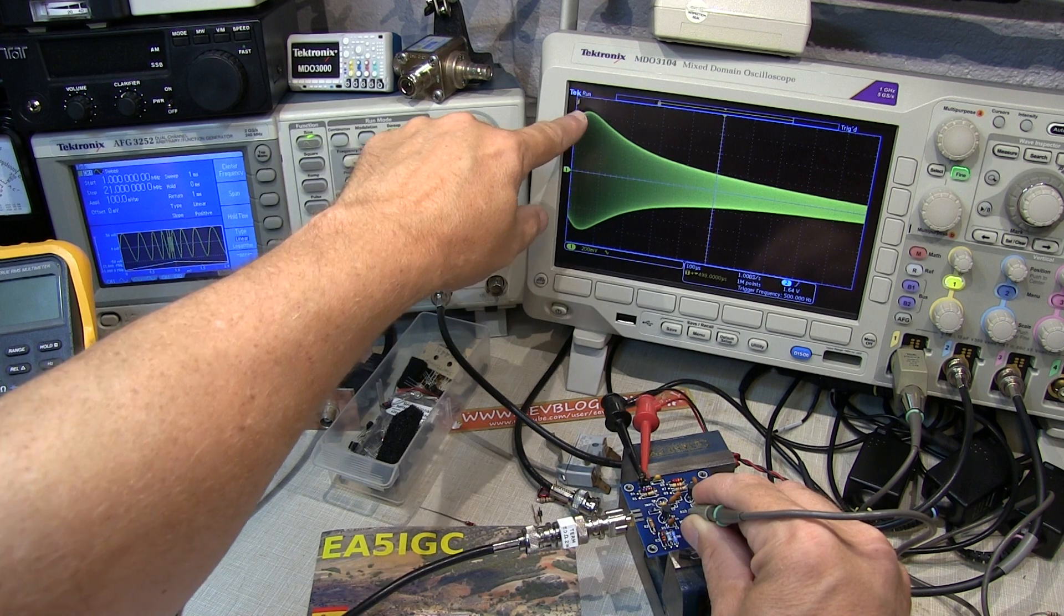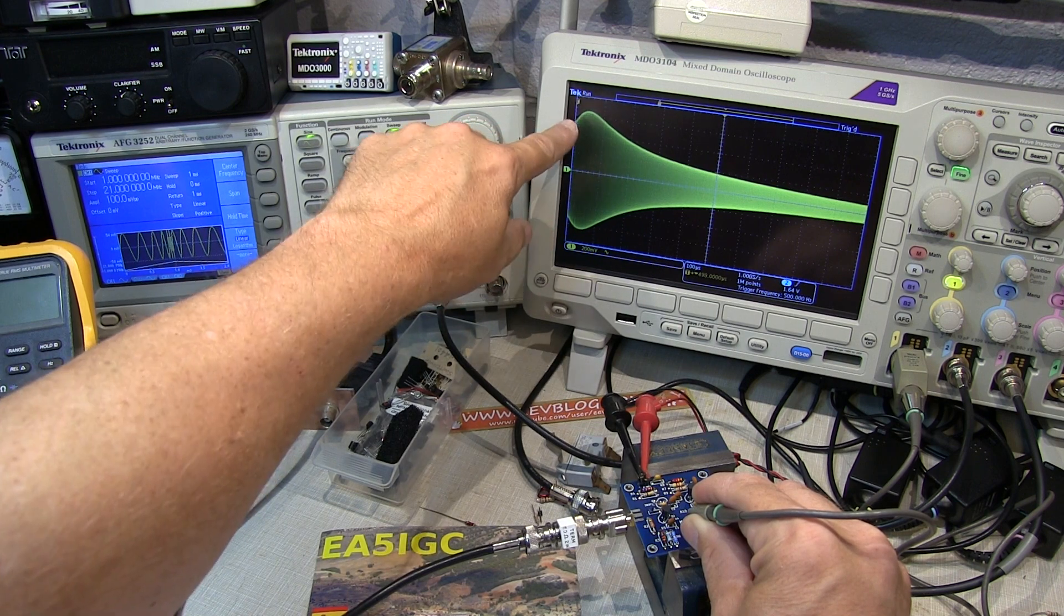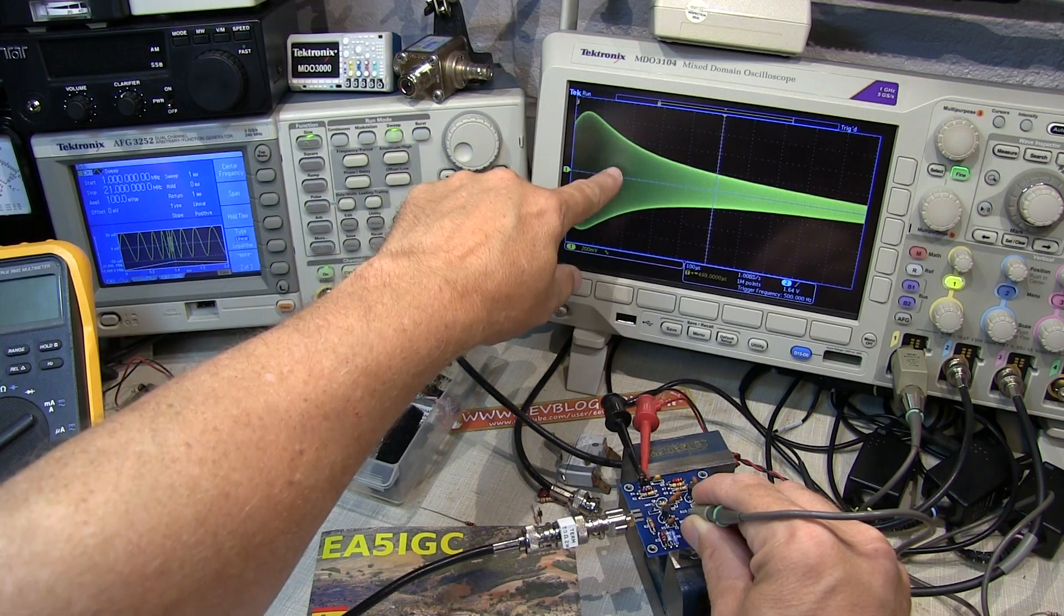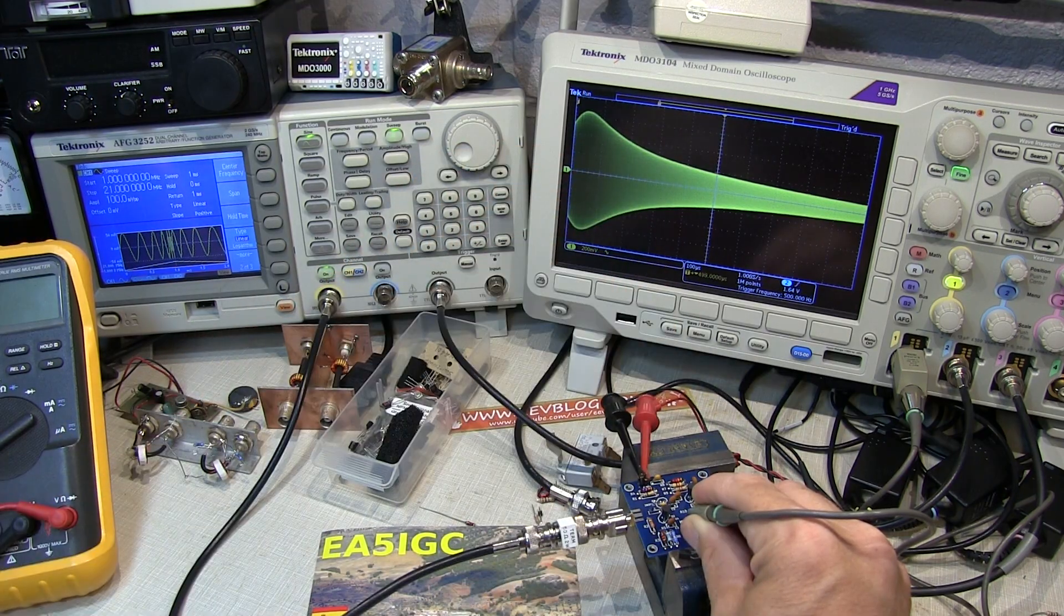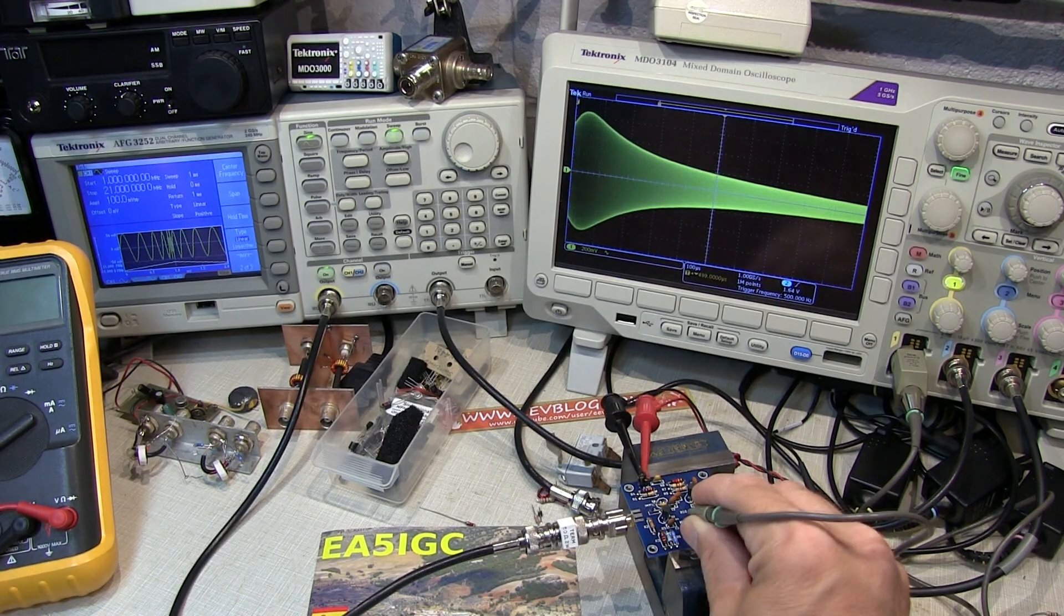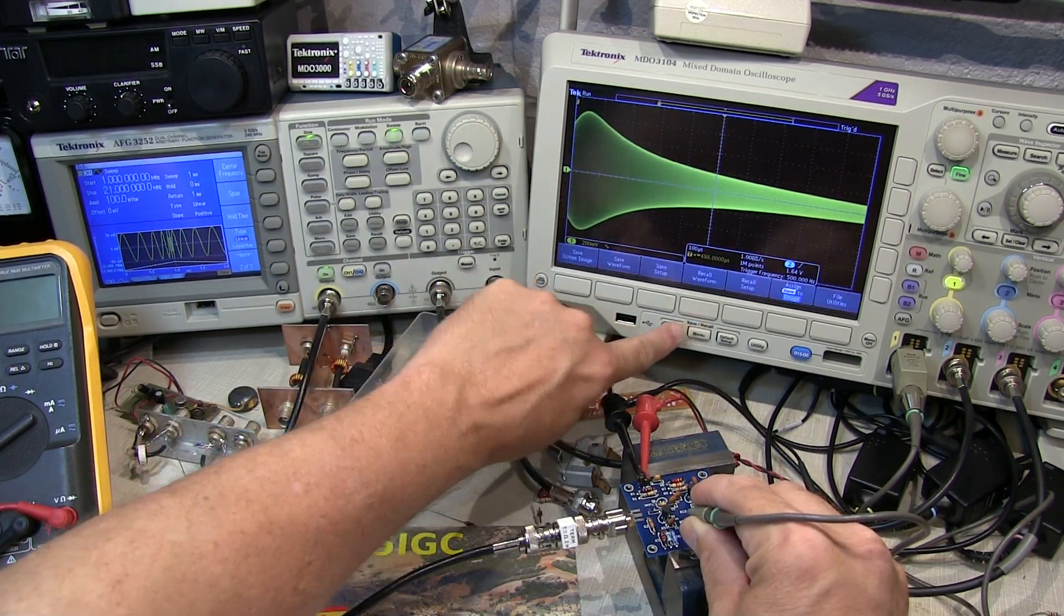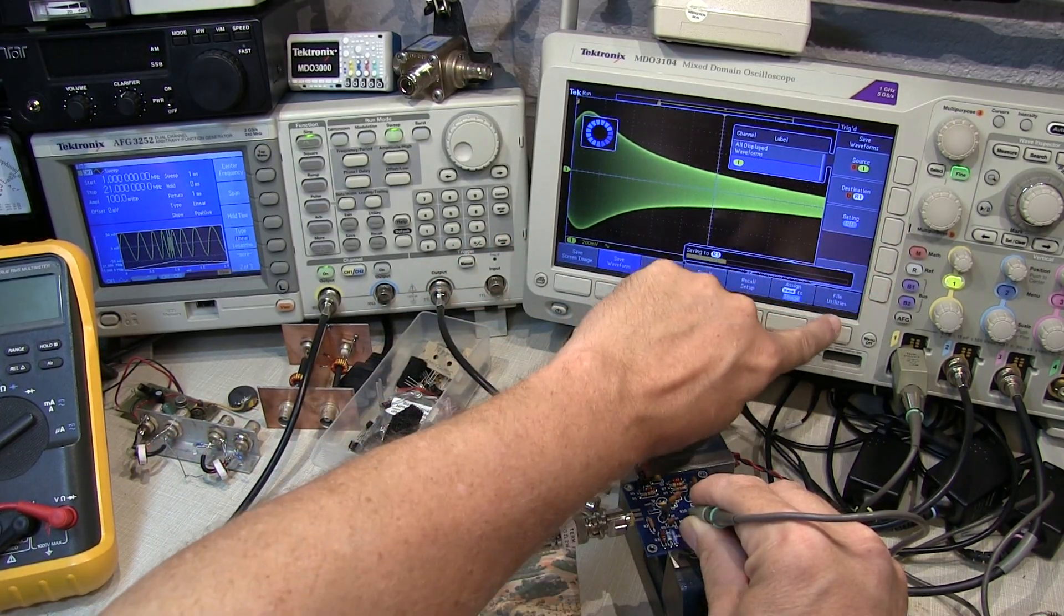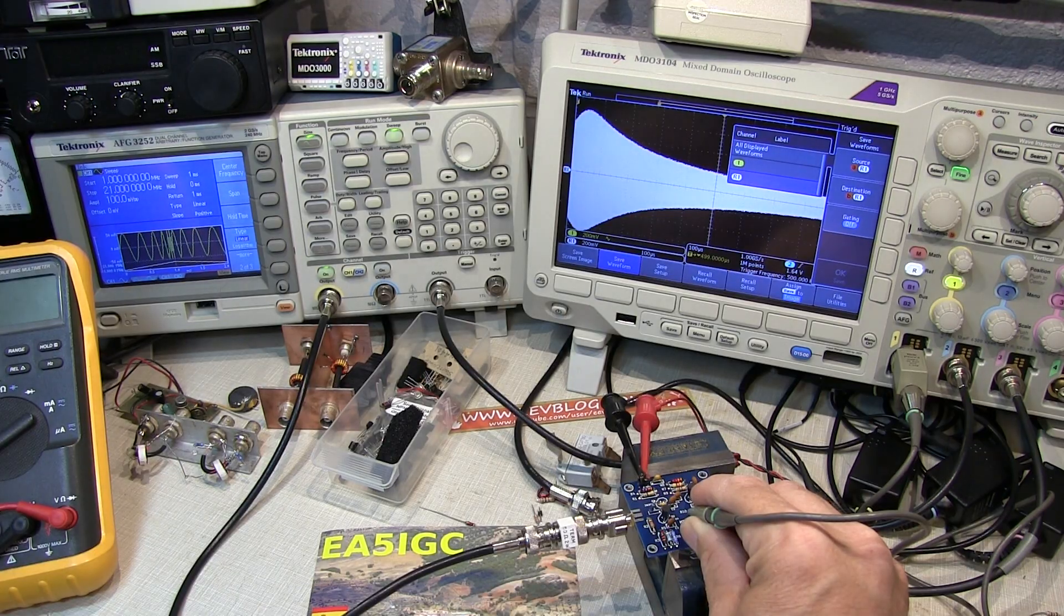So at 70% down, which would be the 3 dB bandwidth point, we're going to be down just a little over 2 divisions. So somewhere between say 4 and 5 MHz would be the bandwidth of this amplifier. So let's save this waveform in a reference waveform here so that we can compare it later on to the cascode.